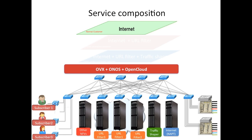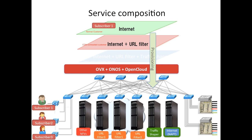First, we will show the simplest service composition. The first composition contains only internet connectivity service. From the GUI, we will assign internet connectivity service to subscriber1. After this operation, ONOS pushes flows, and that makes subscriber1 able to access the internet. Secondly, we will show the second service composition: internet plus URL filter service.